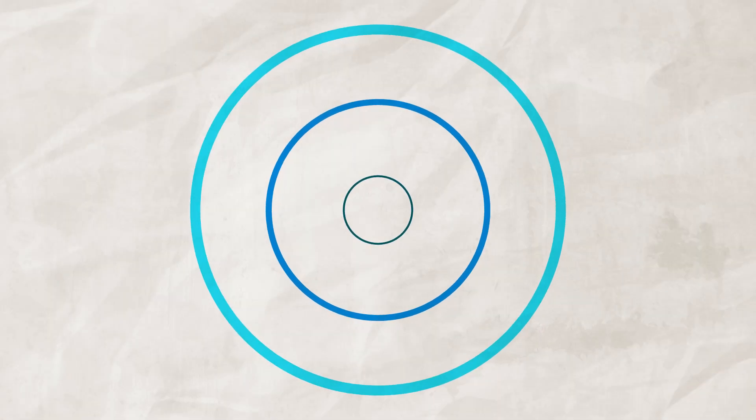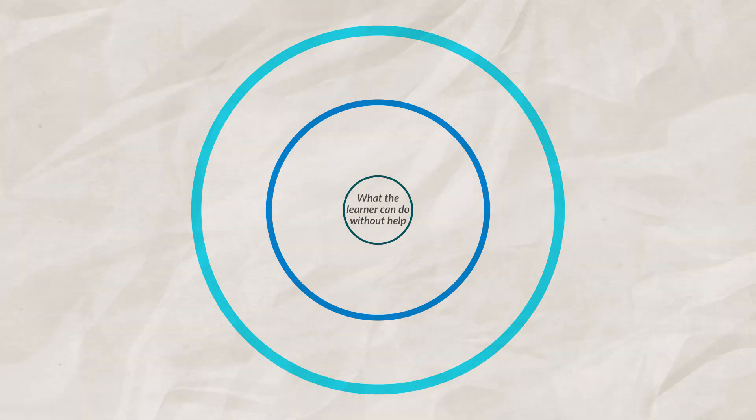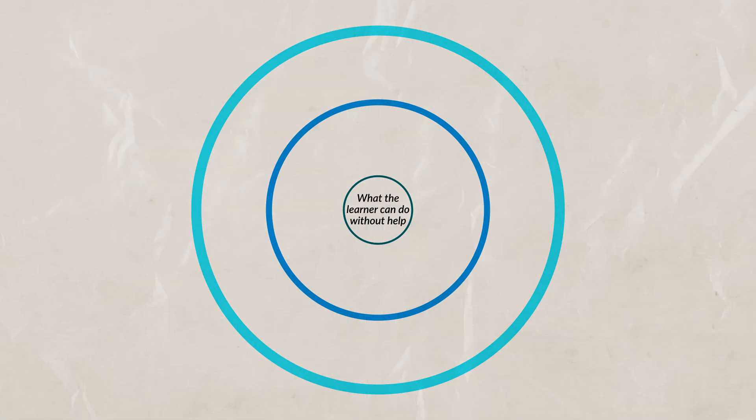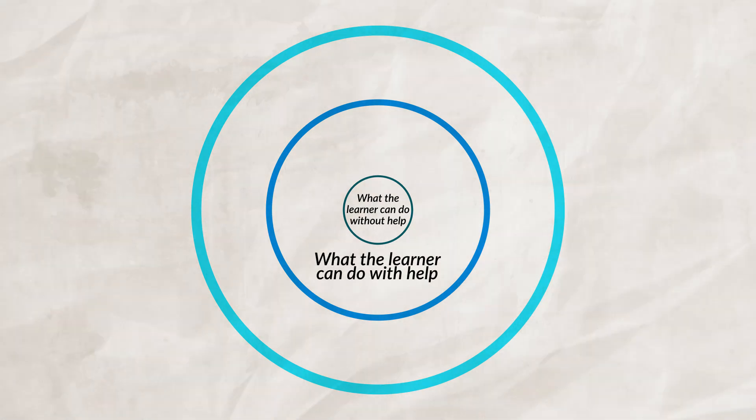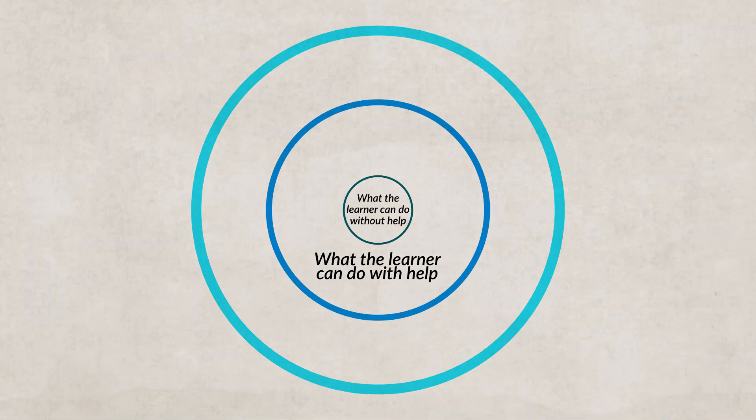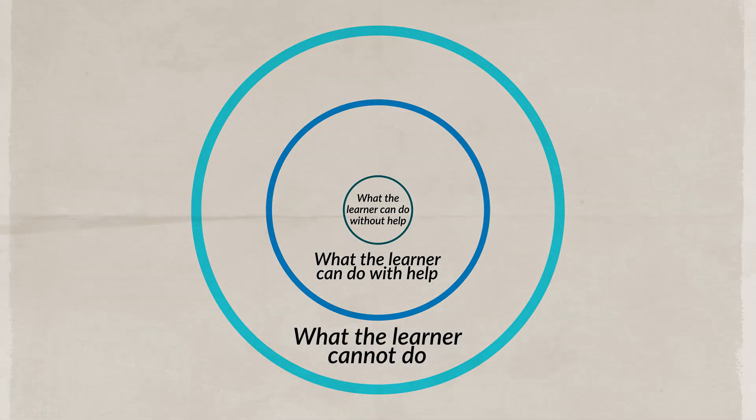To better understand Vygotsky's ideas we can look at this simple model. In the center is what the child can do without any outside assistance. The ring outside the center circle represents concepts or items that the child can learn with the help of scaffolding — this is known as the zone of proximal development. The last ring, just outside the zone of proximal development, is what the child cannot learn at this current time. In order for children to learn efficiently and effectively, you want them to learn concepts that are not just in the center but are also not too far outside the circle. If a concept is too far outside the zone of proximal development, the child will get frustrated and may not be able to learn the concept, potentially developing learned helplessness or beginning to feel inferior.